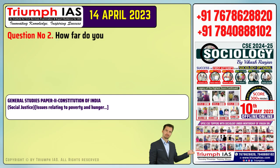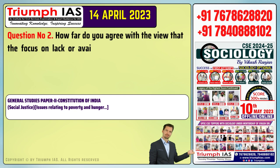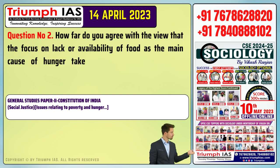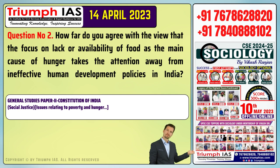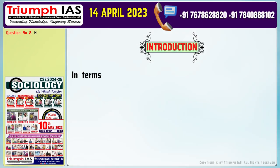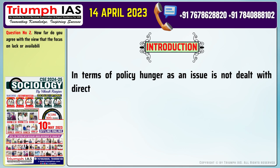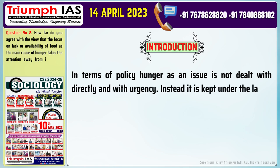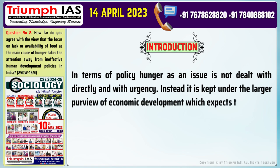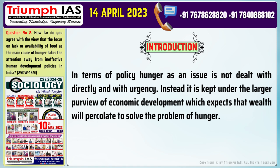Question number 2: How far do you agree with the view that the focus on lack or availability of food as the main cause of hunger takes the attention away from ineffective human development policies in India? In terms of policy, hunger as an issue is not dealt with directly and with urgency. Instead, it is kept under the larger purview of economic development, which expects that wealth will percolate to solve the problem of hunger.